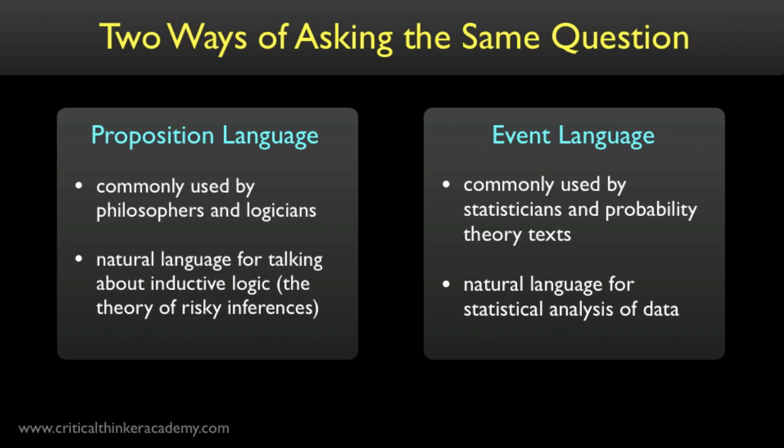On the other hand, the event language is more commonly encountered in statistics and probability theory textbooks, and it's often the more natural language when talking about statistical analysis of data. It's also more natural when we're using, say, the frequency interpretation of probability, since frequencies are usually defined in terms of ratios of events.